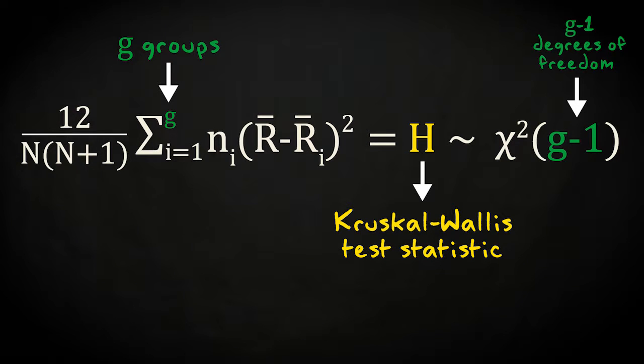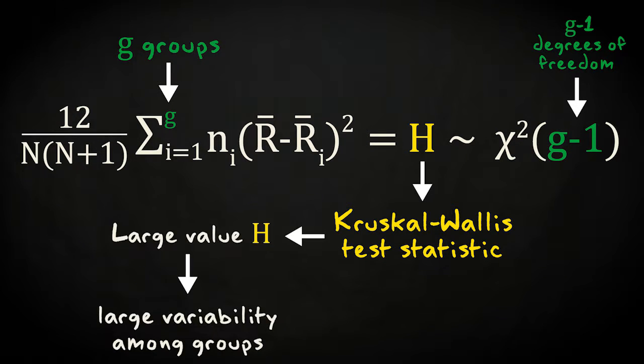A large value for the test statistic indicates that there is a large variability among the sample mean ranks compared to what is expected under the null hypothesis that the groups have identical population distributions. The p-value gives the probability that the value larger or equal is found if the null hypothesis were true.